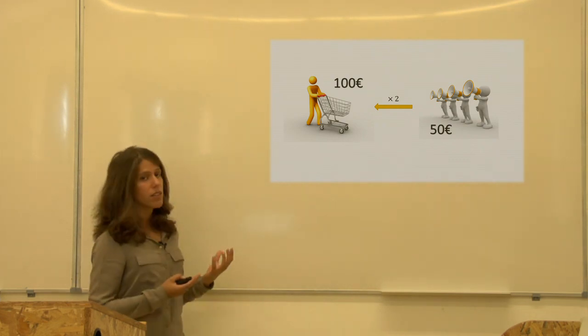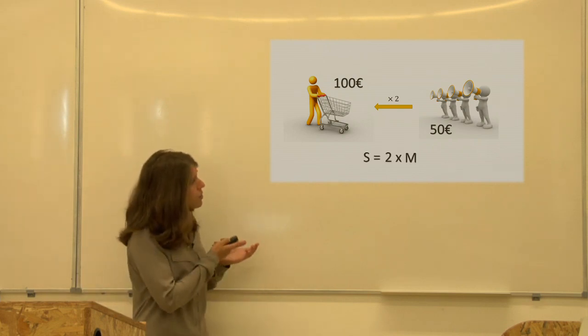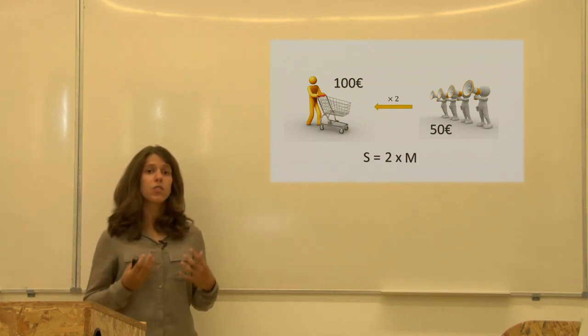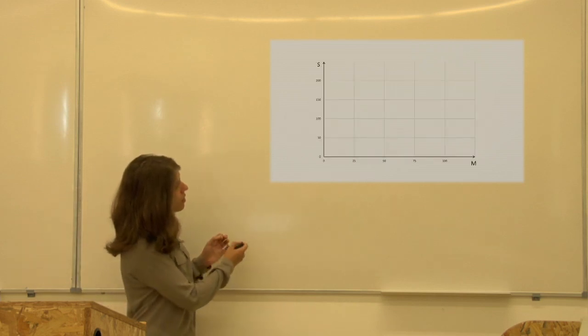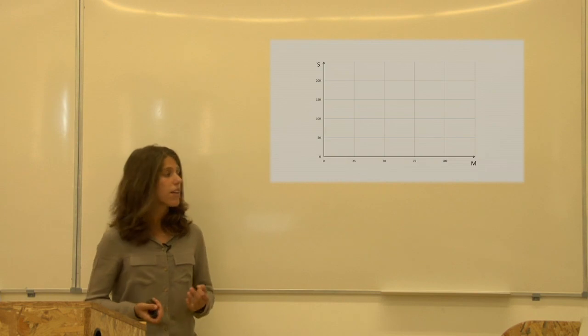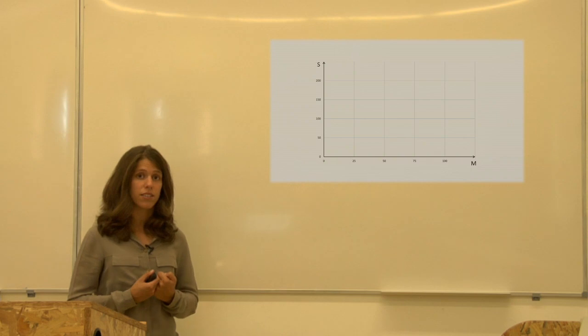So we can write this as a mathematical expression saying S equals 2 times M. And we can also plot this expression in a graph. So along the horizontal axis we will measure the amount we spend in marketing and along the vertical axis we will measure the amount we receive in sales.